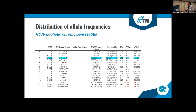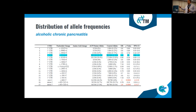Looking at the non-alcoholic chronic pancreatitis group compared to controls, we found the same result, except that the accumulation of this promoter variant was almost significant in this group. In the alcoholic chronic pancreatitis group, we see no association between controls and patients.